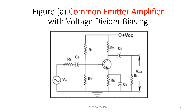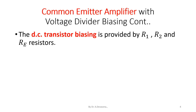The emitter terminal is common to both input and output. The resistors R1 and R2 form the voltage divider biasing. The capacitor C suffix C is acting as a coupling capacitor and C suffix B is a bypass capacitor, as indicated in the diagram. The DC transistor biasing is provided by R1, R2, and RE resistors.